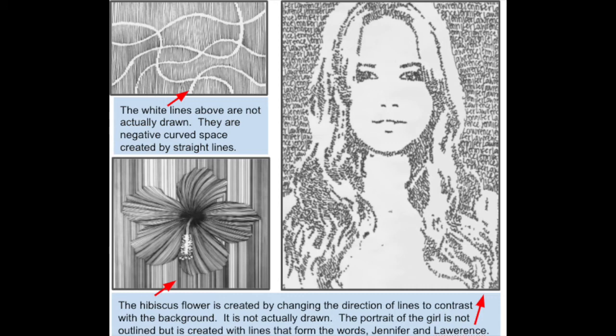Let's look at these three pictures to help you get ready to make your own implied line design. In the top example, the white lines are not actually drawn — they're negative curved spaces created by the straight lines around them. In the hibiscus flower below, it's created by changing the direction of the lines to contrast with the background — not actually drawn lines around that flower. The portrait of the girl is not outlined but created with lines that form words such as 'Jennifer' and 'Lawrence.' The positive space is filled with words, yet it creates a positive space out of the negative space.